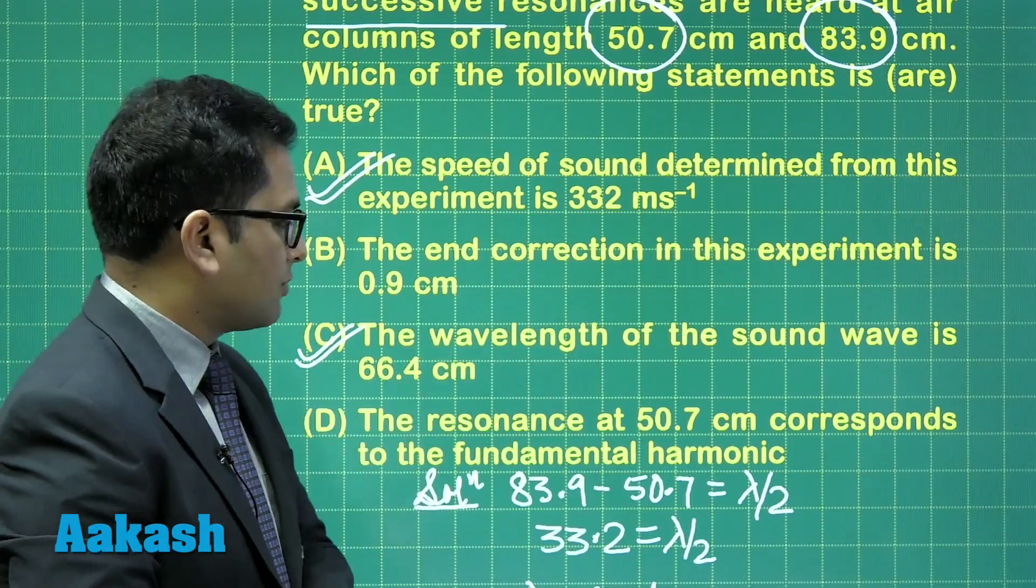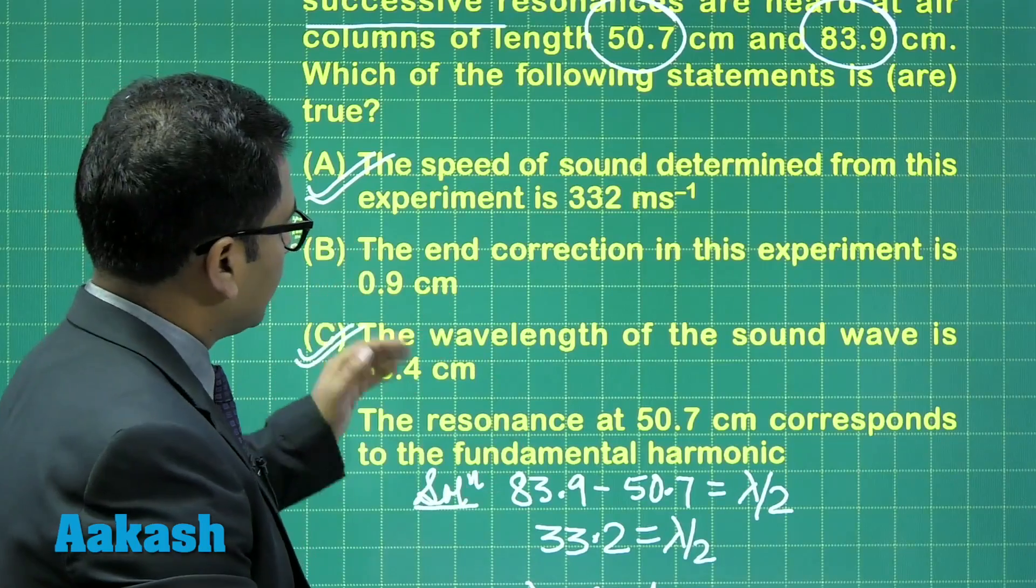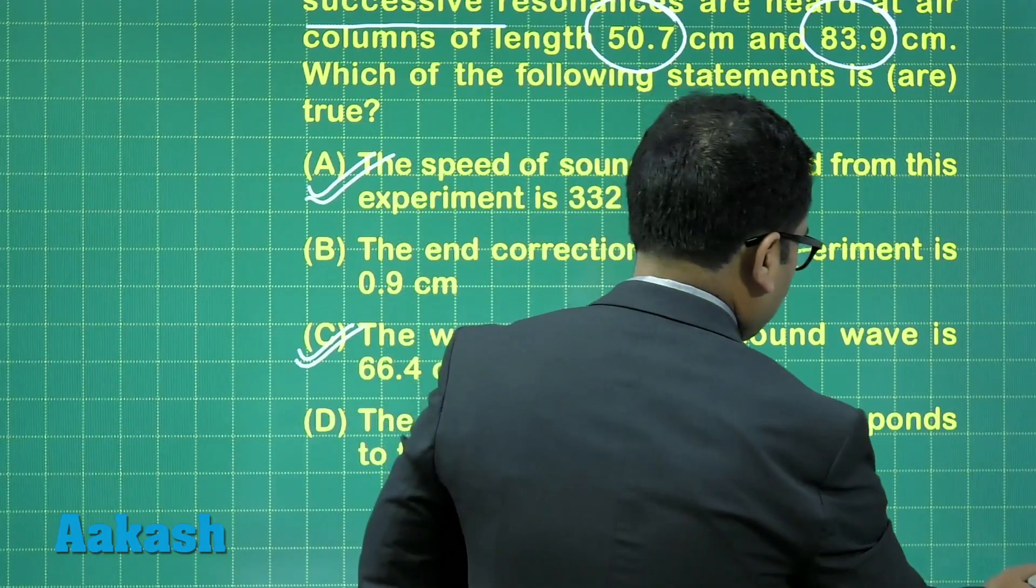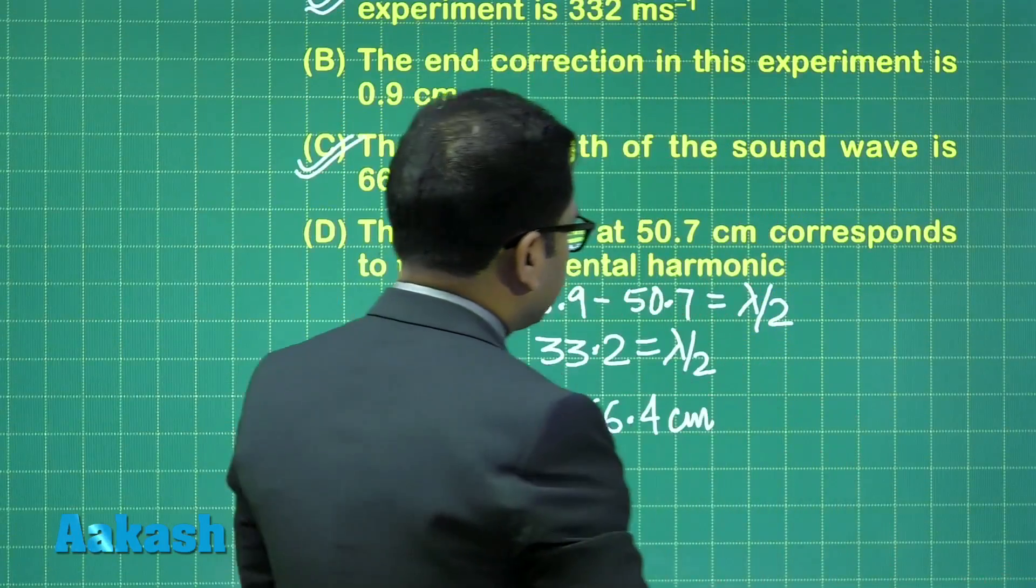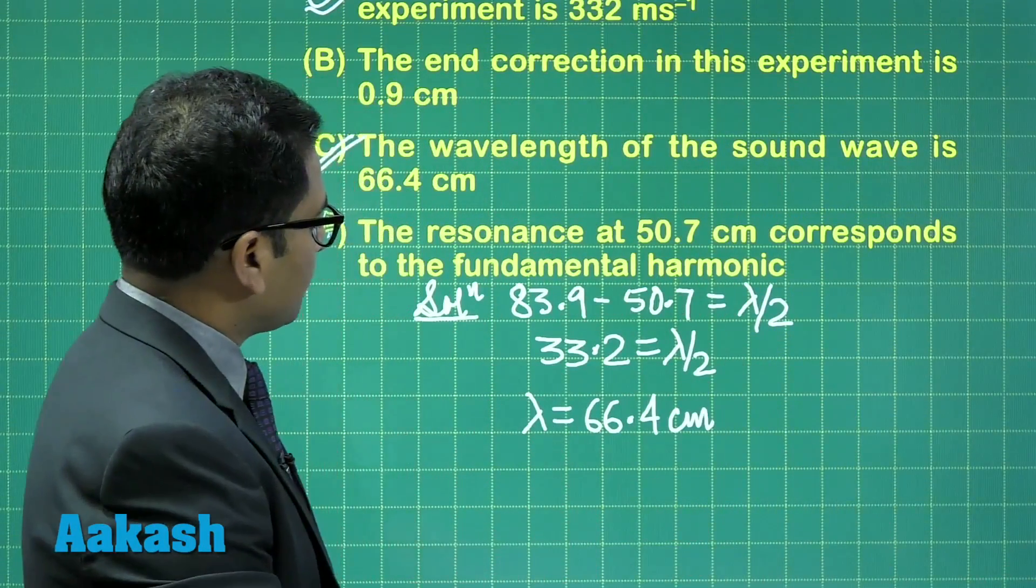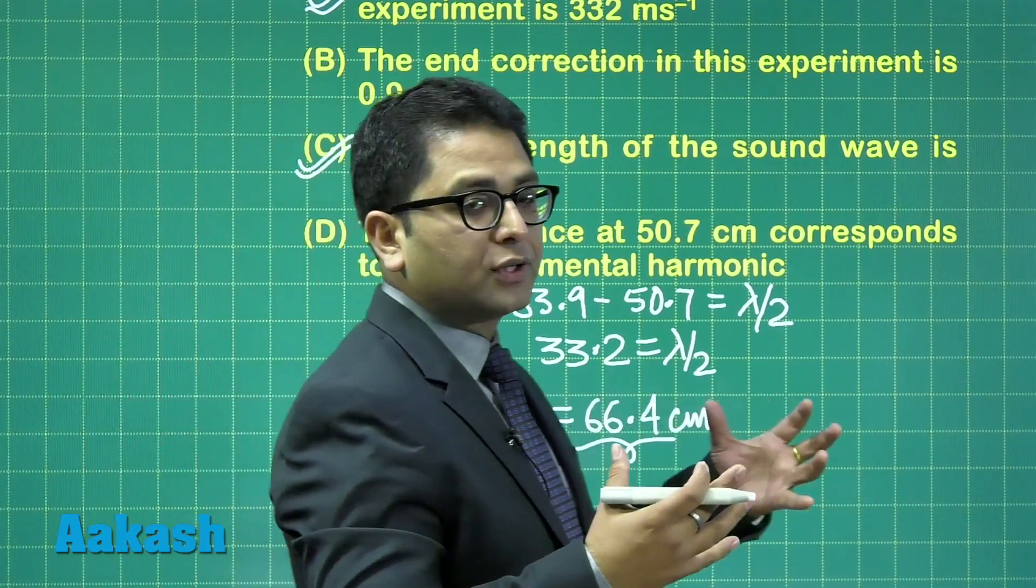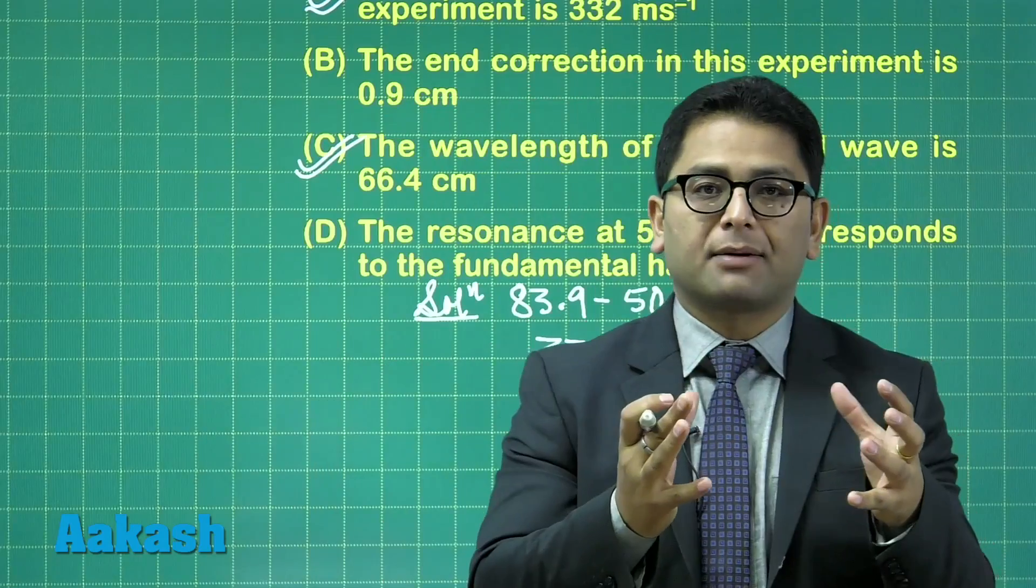The remaining B and D has to be done. We'll have to calculate the end correction and whether 50.7 corresponds to the fundamental or not. The idea is very clear, because this is lambda. In the fundamental, the length would be very close to lambda by 4.